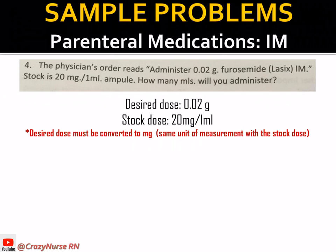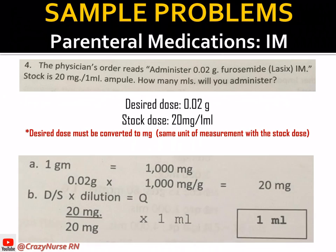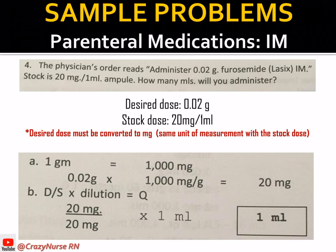The desired dose must be converted to milligrams to match the unit of measurement of the stock dose. Using the conversion: 1 gram equals 1000 milligrams. So 0.02 grams times 1000 milligrams per gram — cancel grams — gives us 20 milligrams. We now have the same unit of measurement as the stock dose and can proceed with dosage calculation.